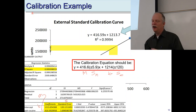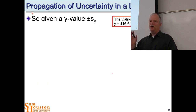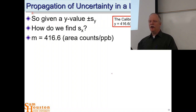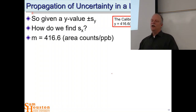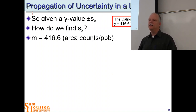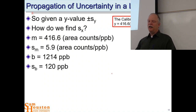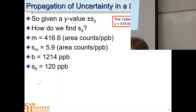Let's define all our variables. There's the calibration equation, and if we're given a y value ± sy, we can determine what x is and find the uncertainty in x. From our ANOVA, m is 416.6 area counts per parts per billion — that's the slope, which converts parts per billion to area counts. sm is the uncertainty in m from the ANOVA table. b is 1214 area counts and sb is 120 area counts. These are units of area counts.